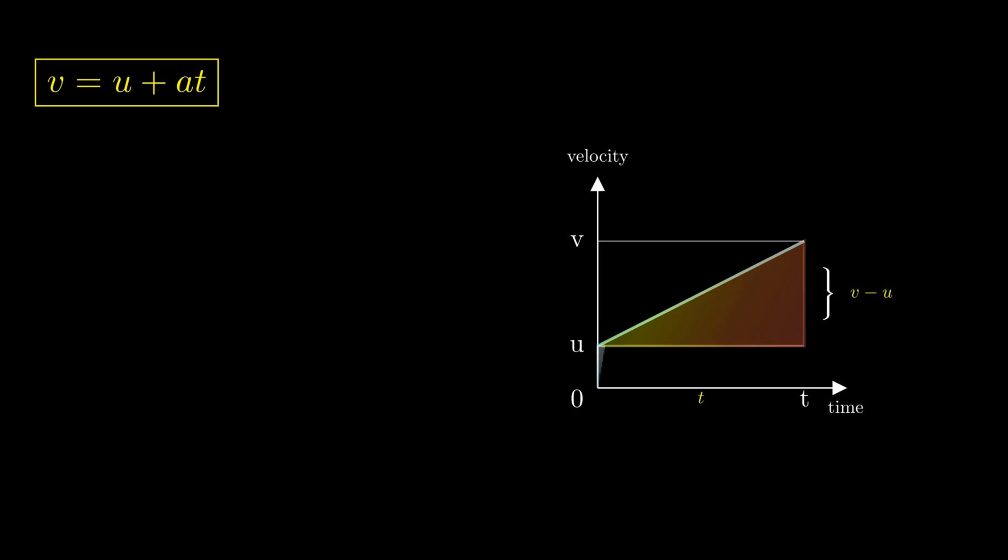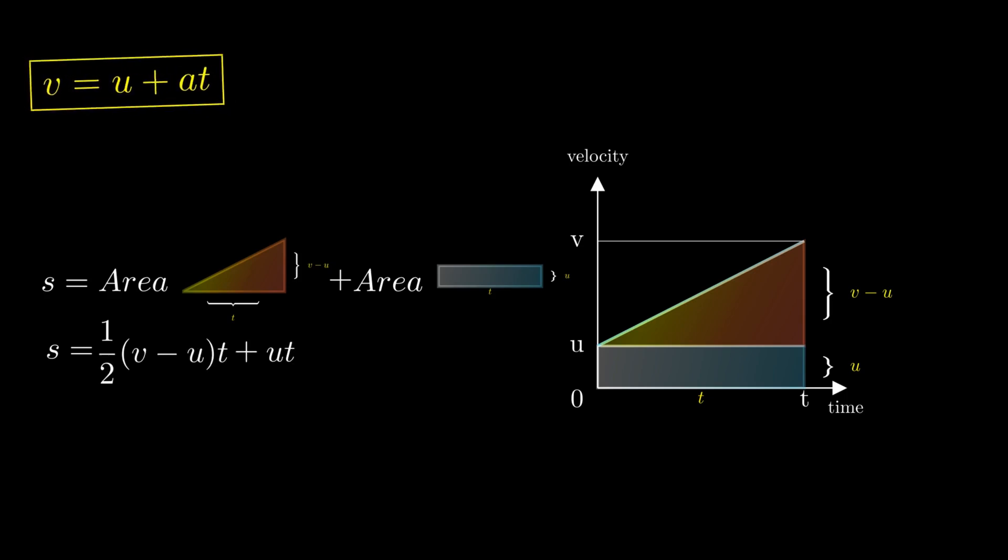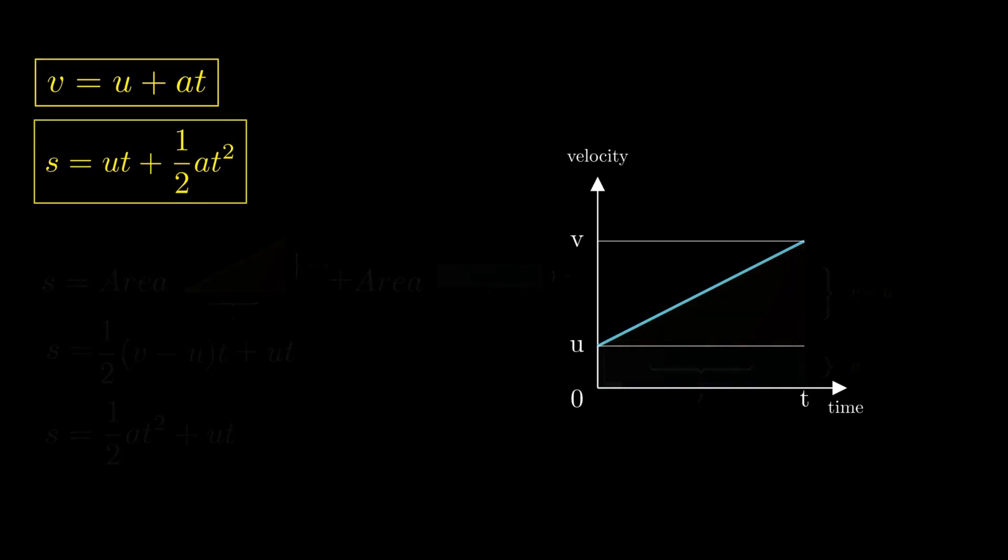For the second equation of motion, we will be calculating displacement. Displacement is given by the area under velocity-time graph. We will calculate this area as the sum of two figures: a triangle and a rectangle. The triangle has height v - u and base t, and the rectangle has length t and width u. Using the formula for areas, we get s = 1/2(v - u)t + ut. Now we can use our first equation of motion to substitute v - u as at. This leaves us with the second equation of motion: s = ut + 1/2 at².